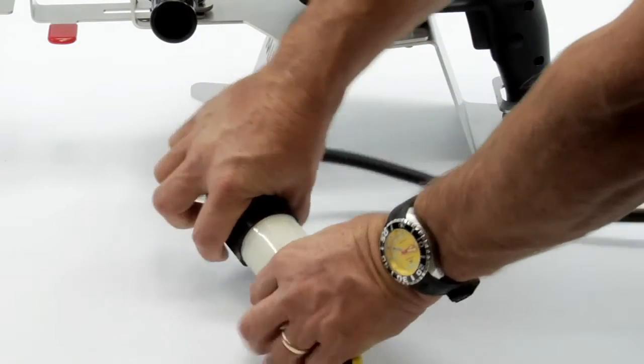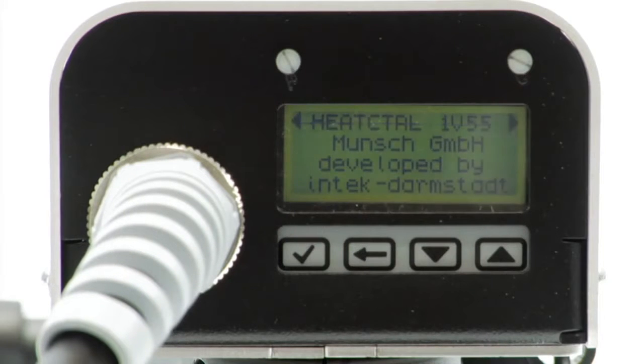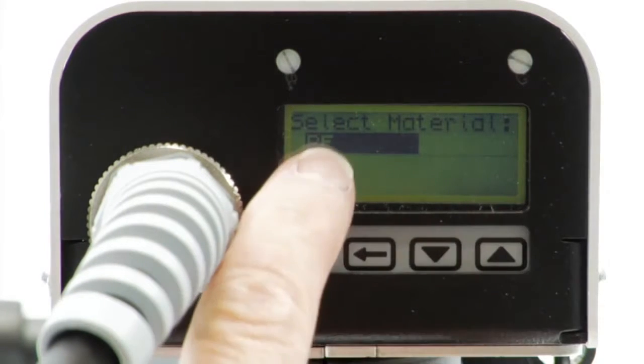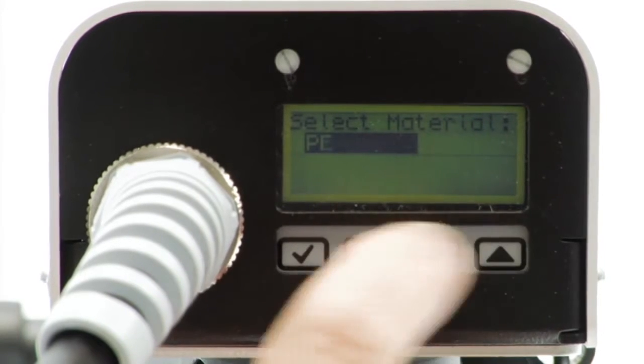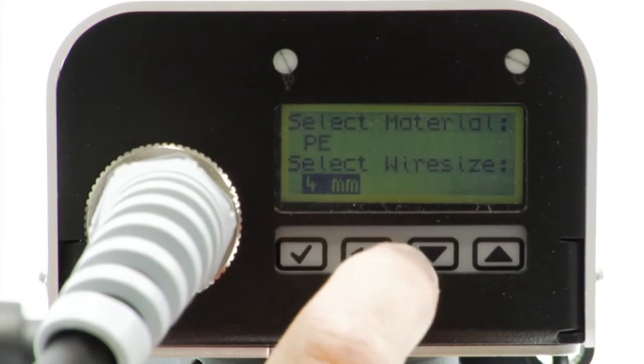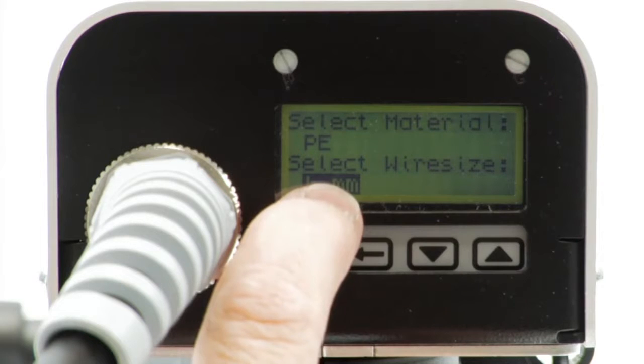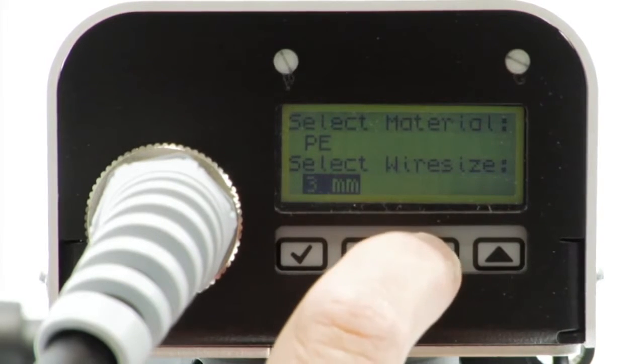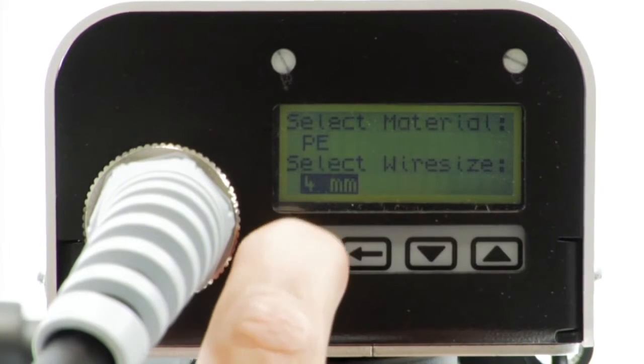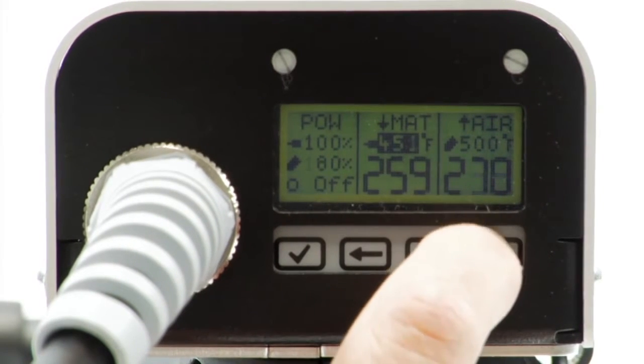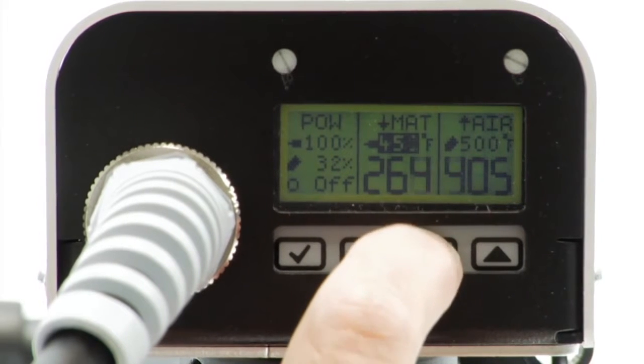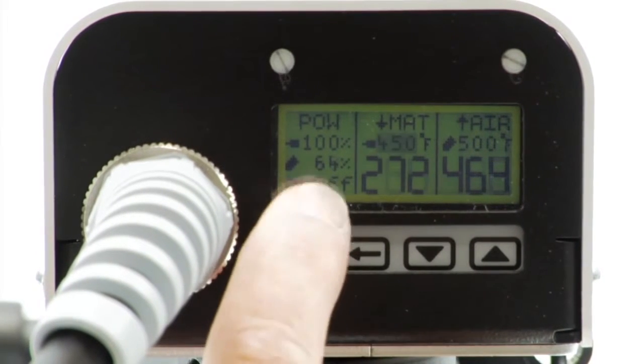Plug the machine into a 220 volt power source. Select the type of material to weld using the arrow buttons. Press the check button to confirm and then select the rod size. Use the down arrow to select the material temperature. Adjust it with the up and down arrows. Press the check button.